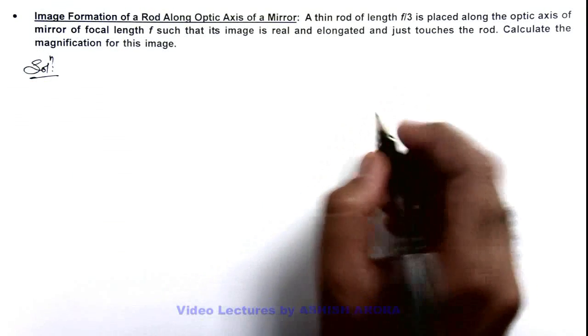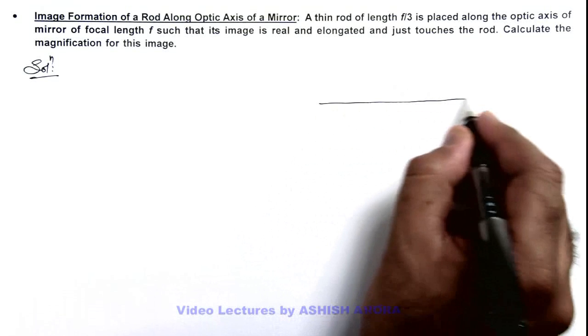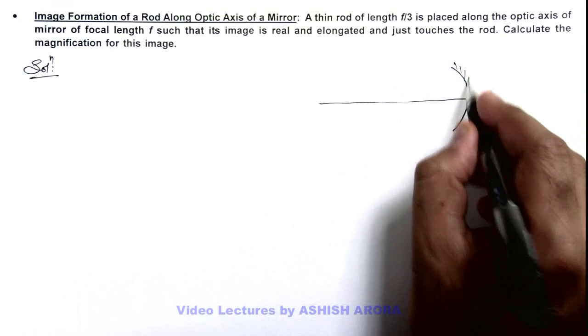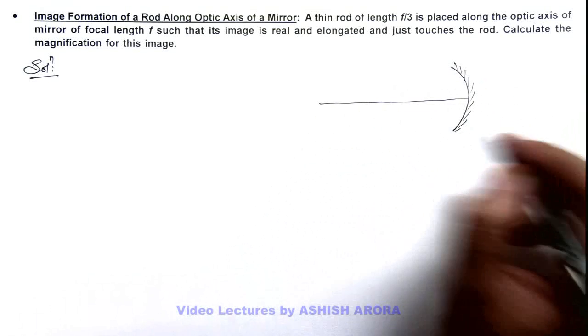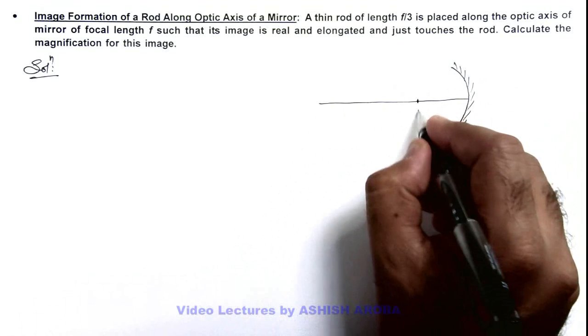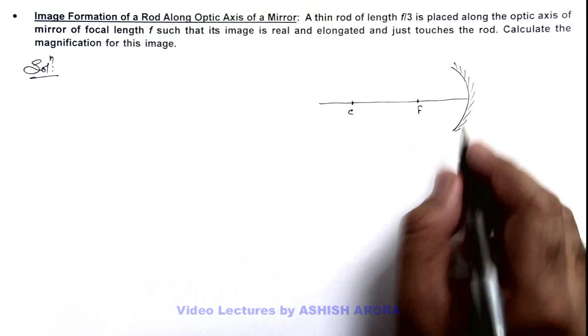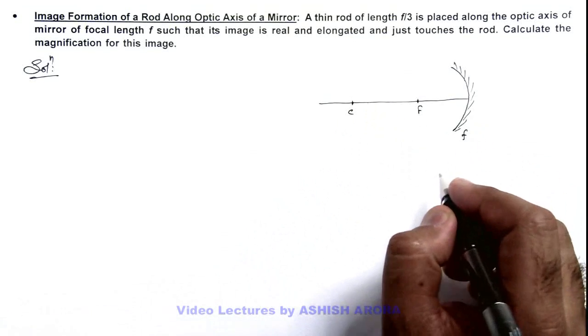For better clarity we draw the picture. So this is the optic axis of mirror and this is the concave mirror. We consider this is point f and this point is c. We are given that the focal length of mirror is f.